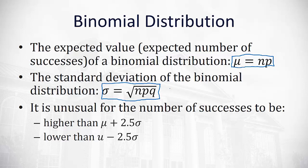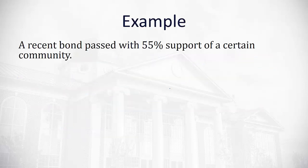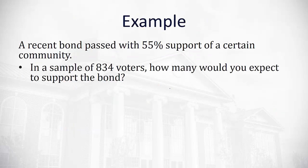Let's take a look at an example where we work with just that. Let's say a recent bond passed in a community that had 55% of the community support. We're going to take a sample of 834 voters to see how they voted. How many would you expect to support the bond?